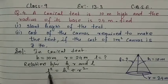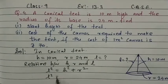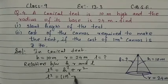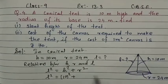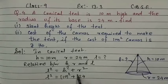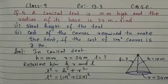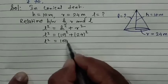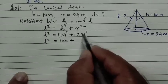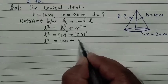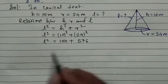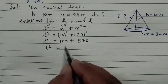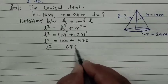So we need to find l. l² = h² + r². Height is 10, so 10 squared plus r, radius is 24, so 24 squared. l² = 10² + 24². 10 squared is 100, and 24 squared is 576. So l² = 100 + 576, which gives 676.